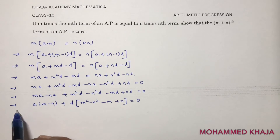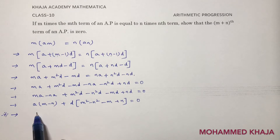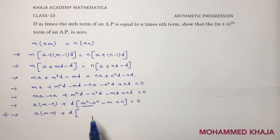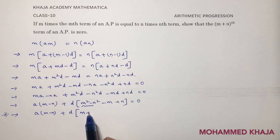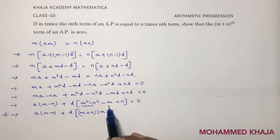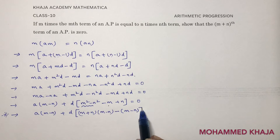This is the most important step. So we have: a(m − n) + d into — here, m² − n² is in the form of a² − b², so we can write it as (m + n)(m − n). And in the remaining two terms, taking minus common leaves (m − n).